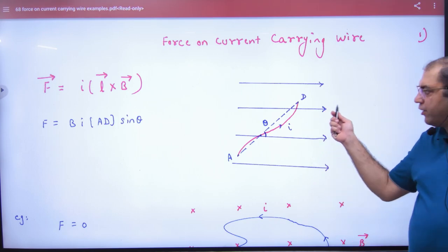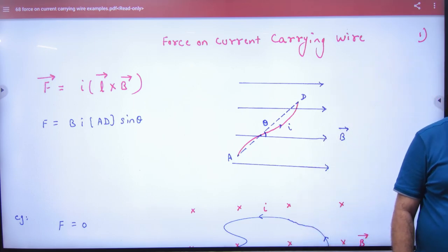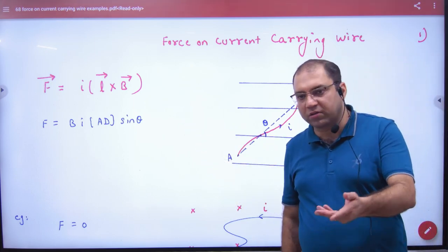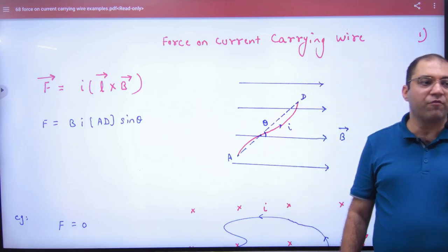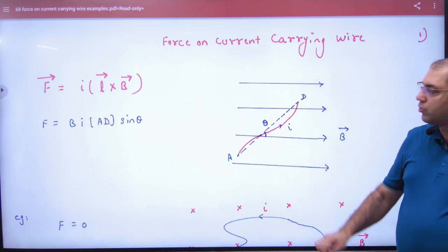The force is a vector. Now what is the formula? I into L cross B. L is a vector. The vector means displacement.